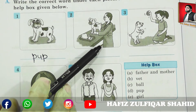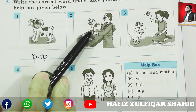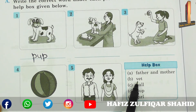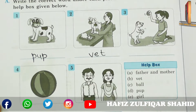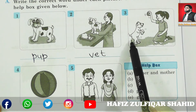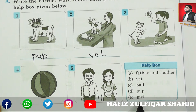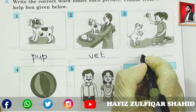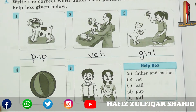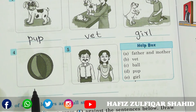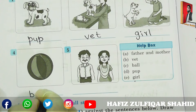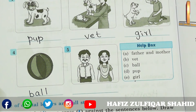Next — who is this? It's a doctor who is looking for the pup. The doctor of animals is VET. So let's write V-E-T — vet. Now third one — who is this? The girl. She is playing with the pup. GIRL. Let's write G-I-R-L — girl. Next picture — what is it? Everyone knows — it's a BALL. B-A-L-L — ball.